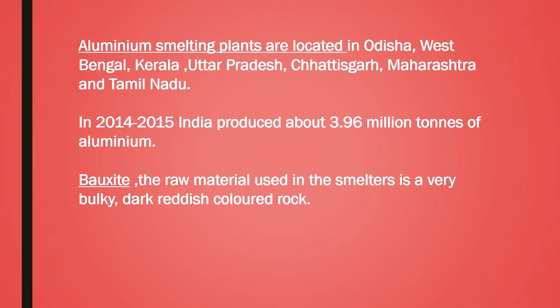Aluminium smelting plants are located in — this is an important map question. They will ask you to locate aluminium smelting plants in different states of India: Odisha, West Bengal, Kerala, Uttar Pradesh, Chhattisgarh, Maharashtra, and Tamil Nadu. Please practice. In 2014–2015, India produced about 3.96 million tons of aluminium — this is just for knowledge, useful if they ask an MCQ.